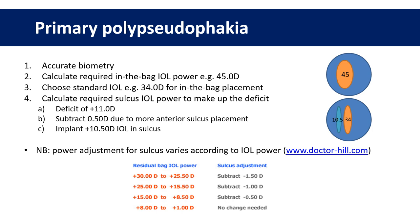The power adjustment for sulcus placement varies according to IOL power. This table from Warren Hill's website shows that if you're implanting a higher-powered lens in the sulcus you need to subtract one and a half diopters from the in-the-bag power, whereas if you're implanting a very low-powered lens no change is needed, because the difference in effective lens position has a relatively low impact with lower-powered IOLs.